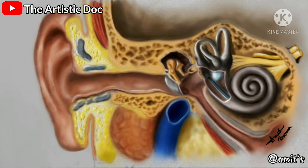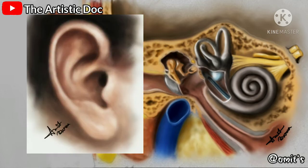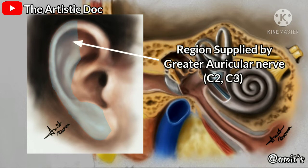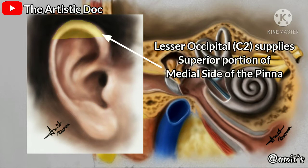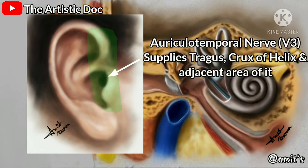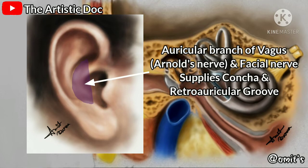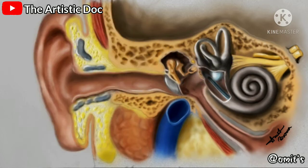The pinna is supplied by five different nerves. Most of the medial surface and only the posterior part of the lateral surface is supplied by the greater auricular nerve. The lesser occipital nerve supplies a small superior portion of the medial part. The auriculotemporal nerve supplies the tragus and crus of the helix with its adjacent area. The auricular branch of the vagus, also known as Arnold's nerve, supplies the concha and corresponding eminence of the medial surface.